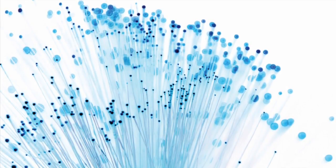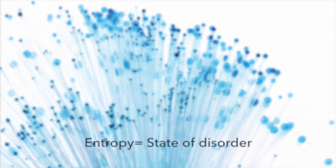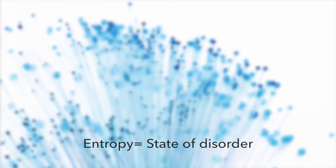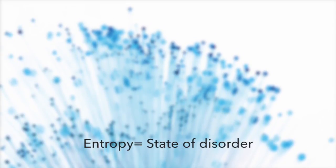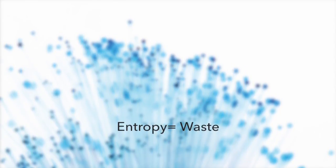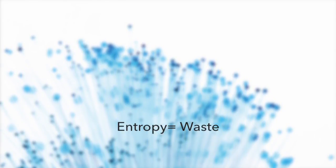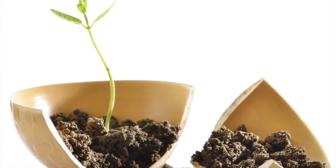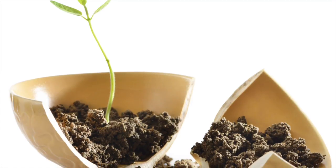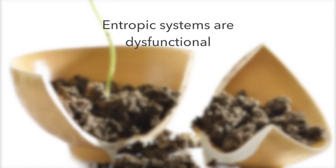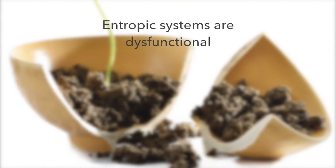The opposite of energy is entropy, which is the incapacity to perform work and a measurement of the degree of disorder within a system. Whereas a stored form of energy is called a resource, a stored form of entropy may be loosely equated to the term waste. An example of an entropic system might be a vase that has fallen on the ground and shattered — the parts are arranged in a random, unordered fashion, making them incapable of serving their intended function.